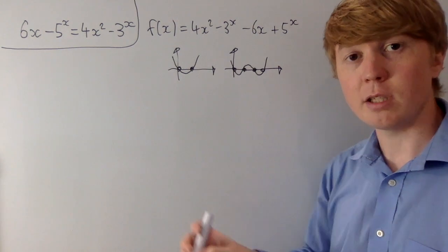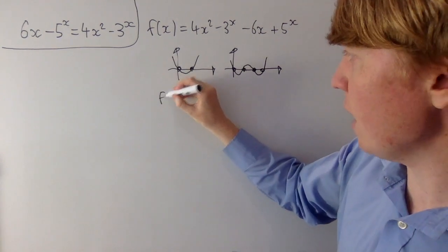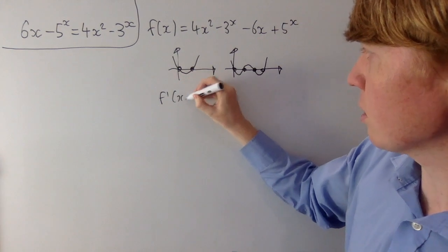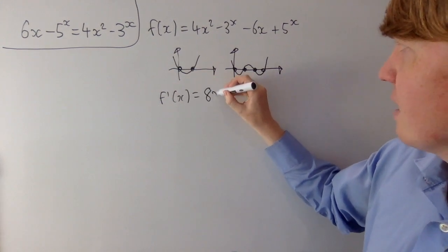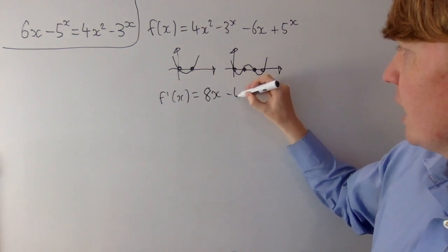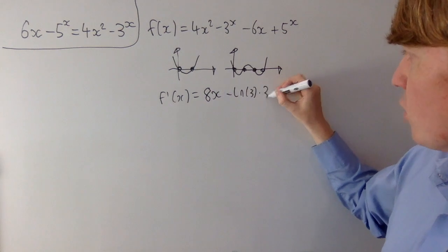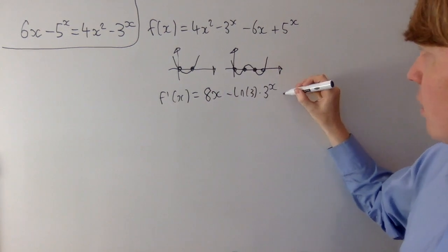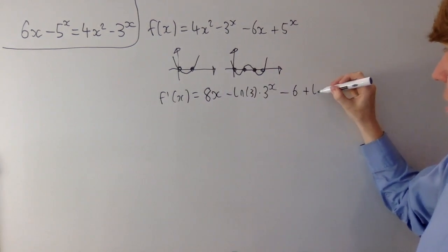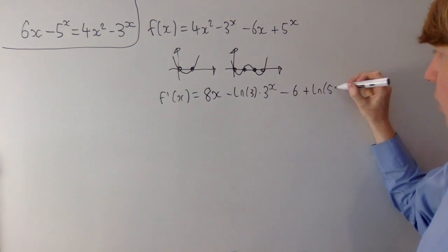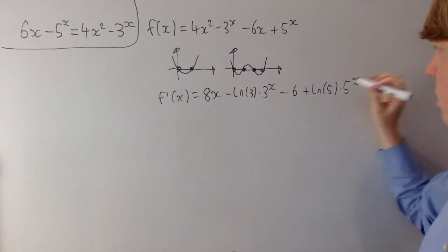The derivative can tell us a lot about what the graph looks like. So f'(x), when we differentiate, we get 8x minus ln(3) times 3 to the x, minus 6, plus ln(5) times 5 to the x.